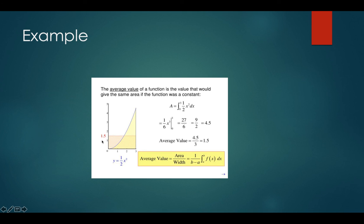So since the total area is 4.5, b minus a is going to be 3 minus 0, it's going to be 3, and so we're going to multiply by 1 third. You can also write it as dividing by 3. Either way, you're going to get 1.5, and that's what we call the average value.